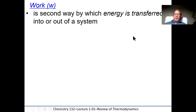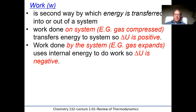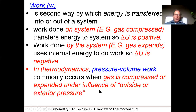Work is the second way in which energy is transferred into or out of a system — we can use heat or work. Work done on the system, for instance when we compress a gas, transfers energy to the system so delta U is positive — molecules increase in speed, moving faster, colliding more frequently with walls. Work done by the system — when a gas expands — uses the internal energy of those molecules, so delta U is negative. Pressure-volume work commonly occurs when a gas is compressed or expanded under the influence of exterior pressure.